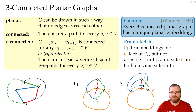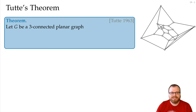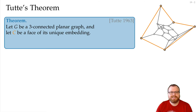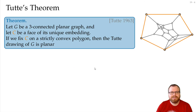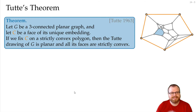That means we have a contradiction — we cannot have two different embeddings, so all embeddings are the same. These 3-connected planar graphs are quite special, and they are also important for Tutte's theorem. If we have a 3-connected planar graph and we pick a face of its unique embedding and map it to a strictly convex polygon, then the unique Tutte drawing is planar and all faces are strictly convex. This is Tutte's theorem — the amazing result you get from these barycentric coordinates.